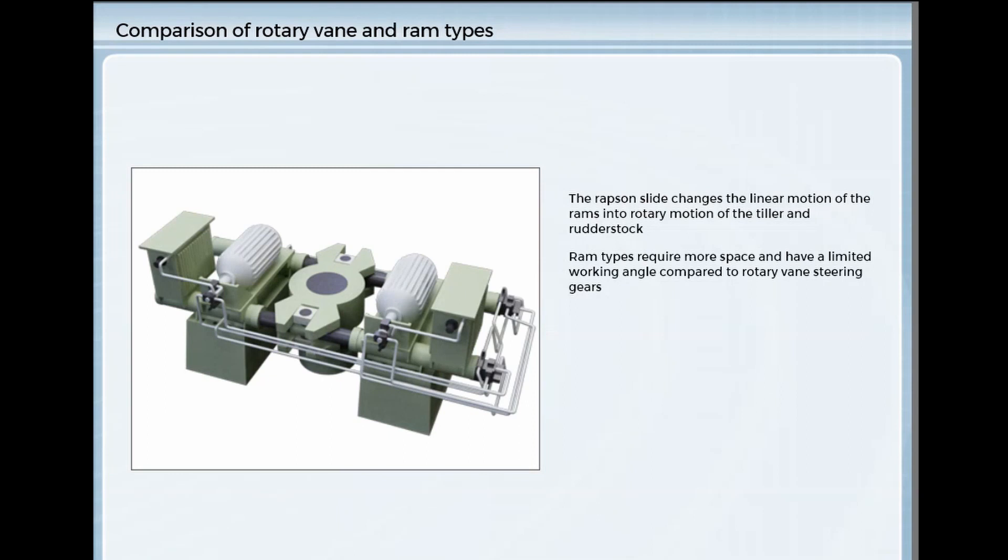The limited working angle is not necessarily a constraint, as most rudders are only designed to work through a similar range. An advantage claimed for ram systems is that they are of simpler construction and therefore easier to repair and maintain. The rotary vane gives a constant torque at all rudder angles, whilst with a ram type the leverage effect of the tiller, and therefore the torque, increases with rudder angle.